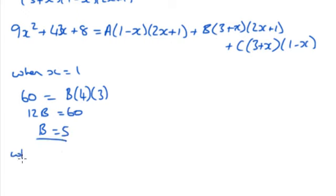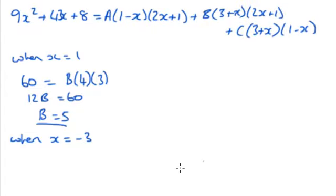Next substitution I'm going to choose to do is let x equal -3, so that this term goes and this term goes, and we can find A. So when x is -3, I'm going to use my calculator for the left hand side. I'm typing in -3 equals, so that I can then do 9 answer² + 43 answer + 8.